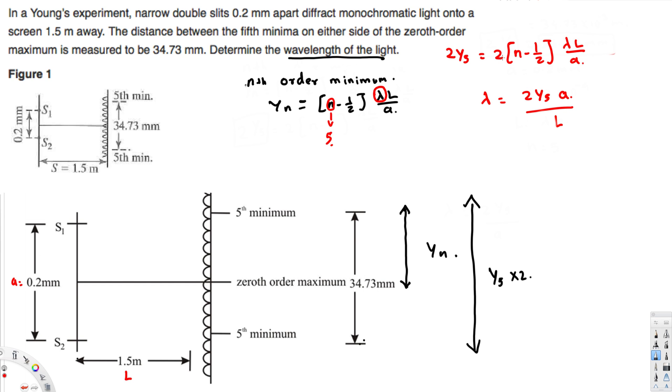Lambda should be here, and L, and then we are going to bring this whole thing to the denominator 2, and also we are going to have (n minus 1/2). We shouldn't cancel this 2y5 because we have the value for this one that is provided.